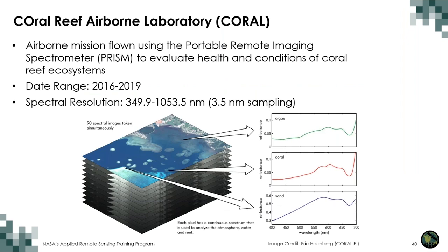The CORAL mission — Coral Reef Airborne Laboratory — used hyperspectral data from PRISM to map coral reefs globally. The goal was to provide critical data and models to analyze the status of coral reefs and predict their future condition. CORAL provided the most extensive and uniform picture of a large portion of the world's coral reefs to date, with spectral coverage from 350 to ~1000 nanometers sampled at ~3.5 nanometer resolution — typical for PRISM.